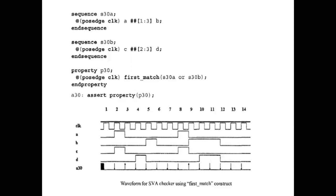First we look at signals A and C. At the second clock, A and C signals match, and similarly at another clock A and C also get matched. So this matching property will properly execute — the first_match property will pass at clock three and at clock eight as shown in the list.